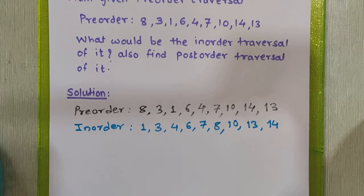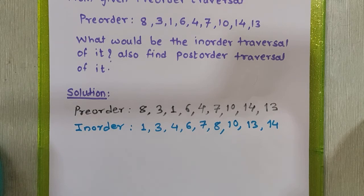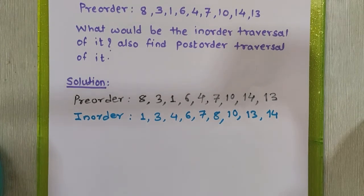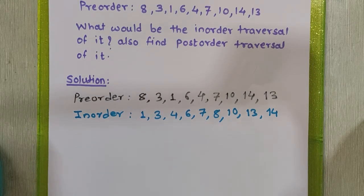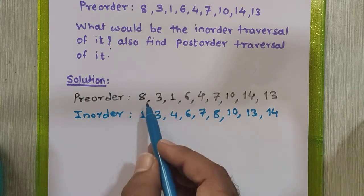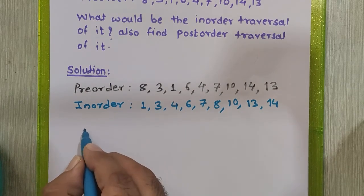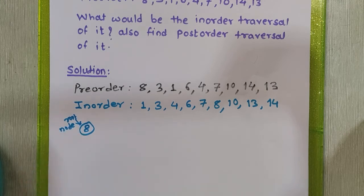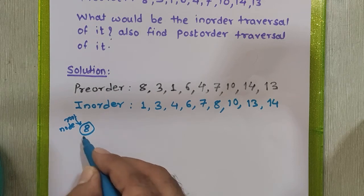Now we have both sequences in hand. You can refer to my previous video on how to design a binary search tree from pre-order and in-order sequences. Our first job is to find the root node of this tree. In a pre-order sequence the root node always comes at the beginning, so we can say that 8 is the root node. We draw 8 as the root.